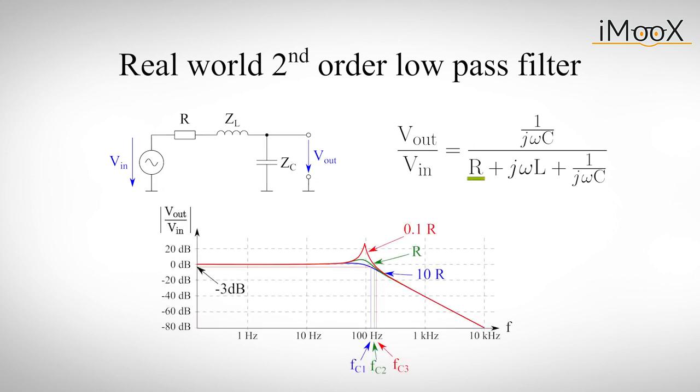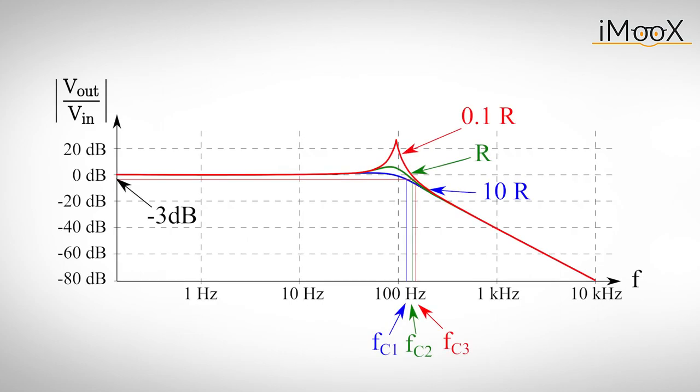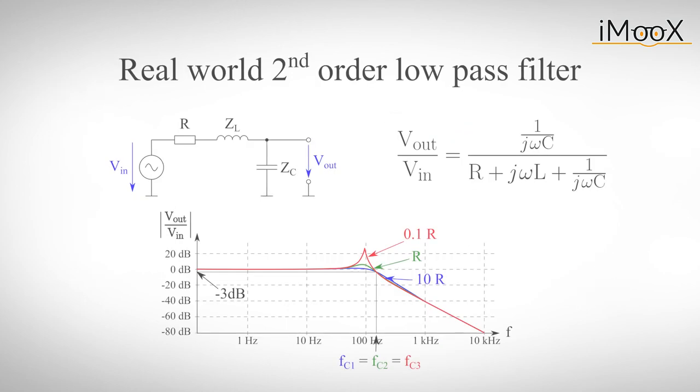If we vary the value of R, we also see that we can influence the behavior of our filter. A change in R not only affects the amplification at the resonance frequency, but consequently changes the attenuation, which leads to different 3dB corner frequencies for different values of R. We can also vary the values of L and C interdependently, such that the corner frequency stays the same. All these degrees of freedom can be used to alter the so-called characteristic of the filter.